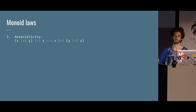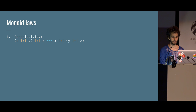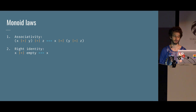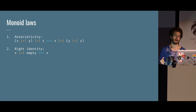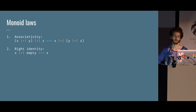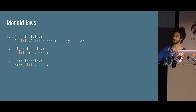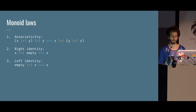The other law is the identity law — right identity and left identity. It basically says that if you combine something with the empty element, it's a no-op. So if you add zero to something, or add the empty string to a string, or take the union of the empty set, nothing changes. And this applies whether the empty is on the left or on the right.